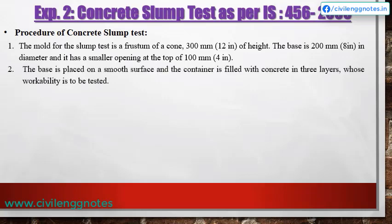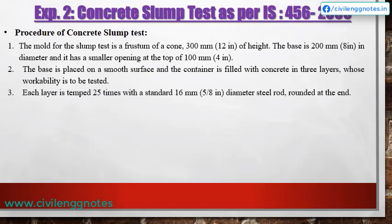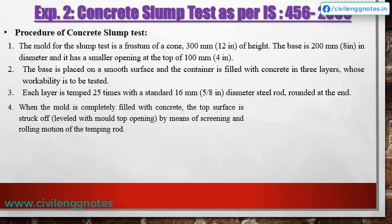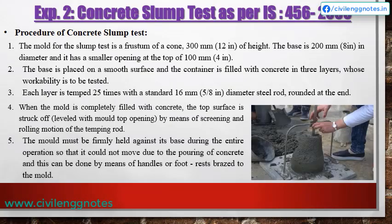Procedure: The base is placed on a smooth surface and the container is filled with concrete in three layers. Each layer is tamped 25 times with a standard 16 mm diameter steel rod rounded at the end. When the mold is completely filled, the top surface is leveled with the mold top opening by means of a screeding and rolling motion of the tamping rod. The mold must be firmly held against its base during the entire operation, which can be done by means of handles or foot rest spreads.